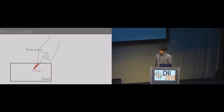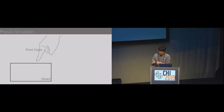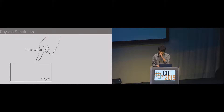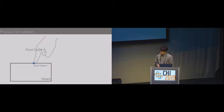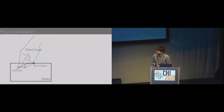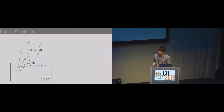When the point cloud exists inside the object, the system regards that the hand is touching the object, and force is applied to the object. The force applied to the object is determined based on a method that uses a proxy called a ghost object. When the fingertip penetrates the object for the first time, the ghost object is placed at the contact position. Thereafter, a force is applied to the ghost object position as if it is connected with a spring and damper to the centroid of the point cloud inside the object. By placing multiple ghost objects for each finger, our system can stabilize the simulation.